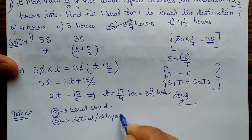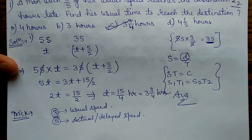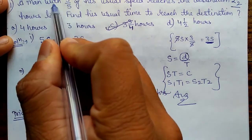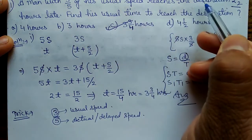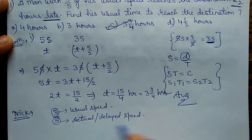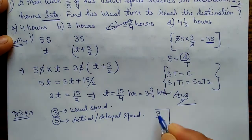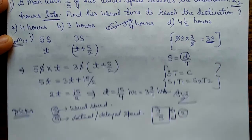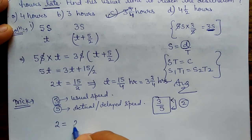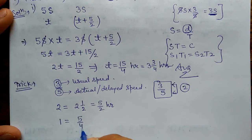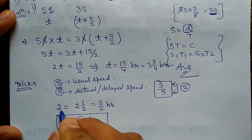The denominator we consider as the actual speed by which he is travelling — the delayed speed. Now, he reaches 2.5 hours late with 3/5 speed. The difference between numerator and denominator is 2 only. So we put 2 equal to 2.5 hours, which is 5/2 hours. That means 1 equals 5/4 hour.